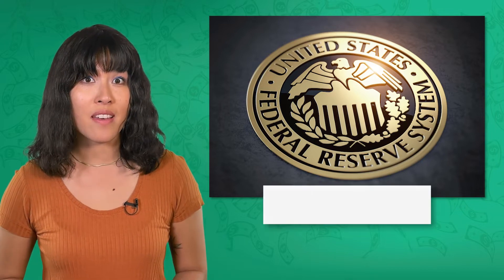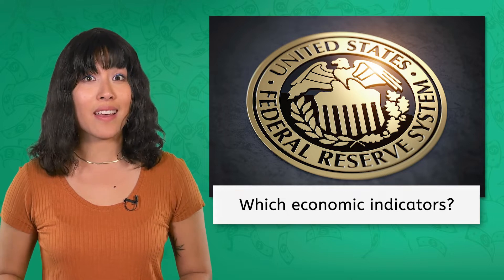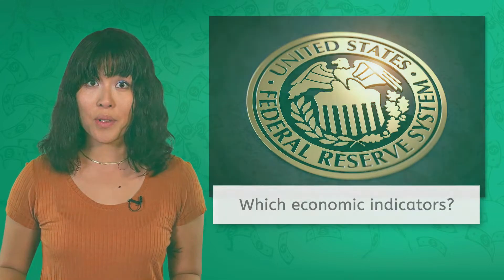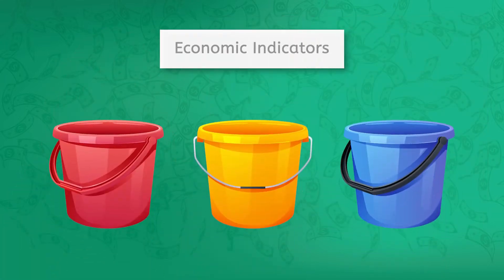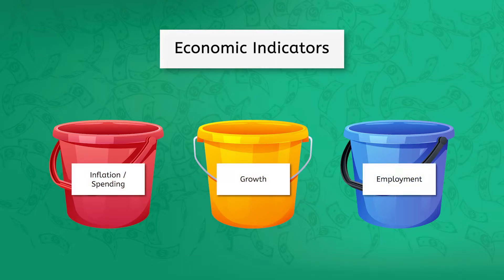So when does the Fed step in to fix the malfunctioning engine of our economy? What economic indicators does it watch to see when the economy is in trouble? The Fed tracks a variety of economic indicators, but they mostly fall into three buckets: inflation or spending, growth, and employment.